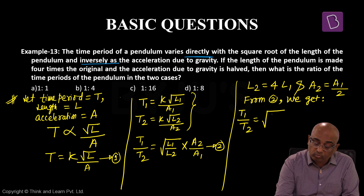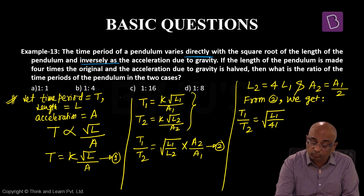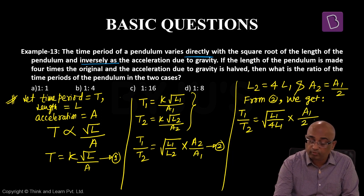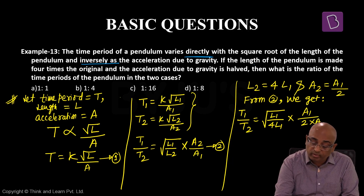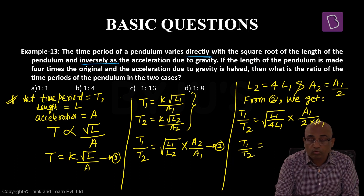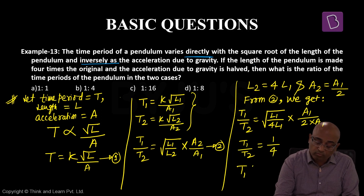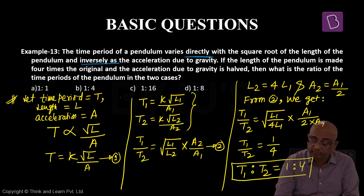Square root of L1 बटे L2 में L2 is equal to 4L1 put करते हैं, A2 को A1 by 2 से replace करेंगे और पहले से denominator में A1 है। So A1 cancel, L1 cancel। So T1 by T2 हो गया square root of 4 into 1 by 2, so 1 by 2 into 2 = 1 by 4। Therefore T1 is to T2 is equal to 1 is to 4। यही इस question का सही उत्तर है।